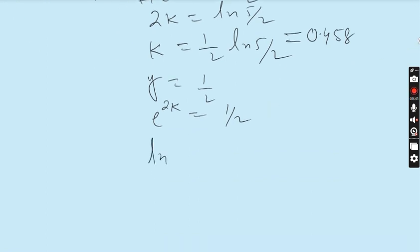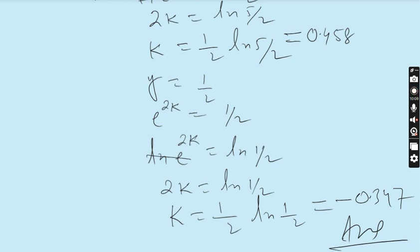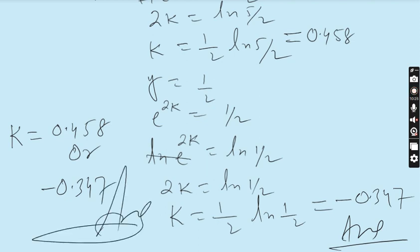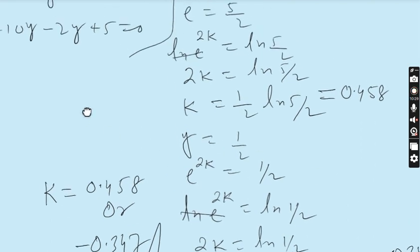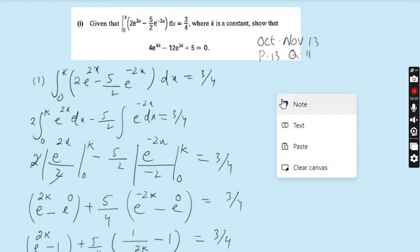Taking ln on both sides: ln(e^(2k)) = ln(1/2). So 2k = ln(1/2), giving k = (1/2) ln(1/2). Using a scientific calculator you get k ≈ −0.347. This is our final answer: two values of k, k ≈ 0.458 or k ≈ −0.347. Hope you enjoyed Part 2 as well as Part 1 — a very important and easy question.